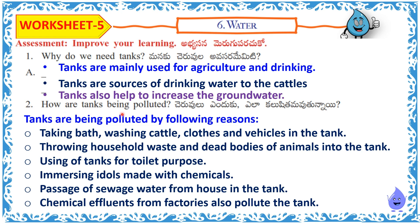How are tanks being polluted? Tanks are being polluted by the following reasons: taking bath, washing cattle, clothes and vehicles in the tank; throwing household waste and dead bodies of animals into the tank; using tanks for toilet purpose; immersing idols made with chemicals; passage of sewage water from houses into the tank; chemical effluents from factories also pollute the tank.